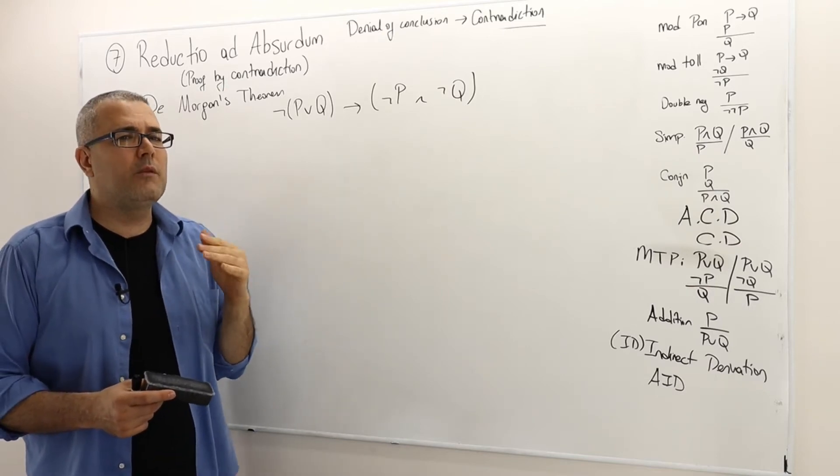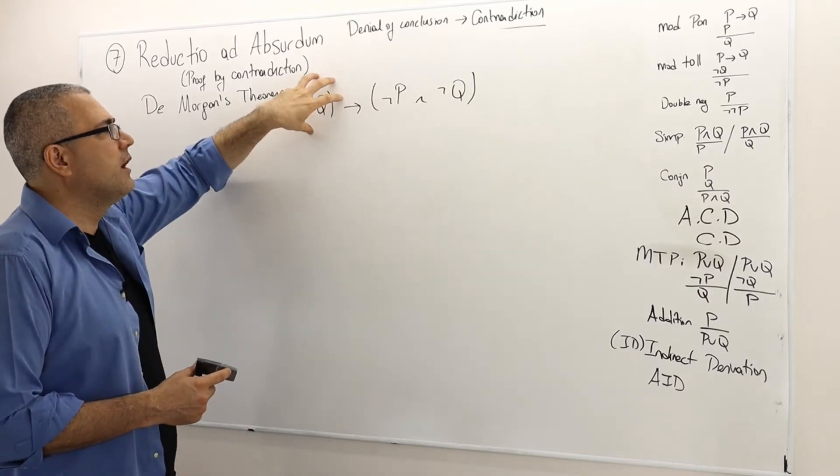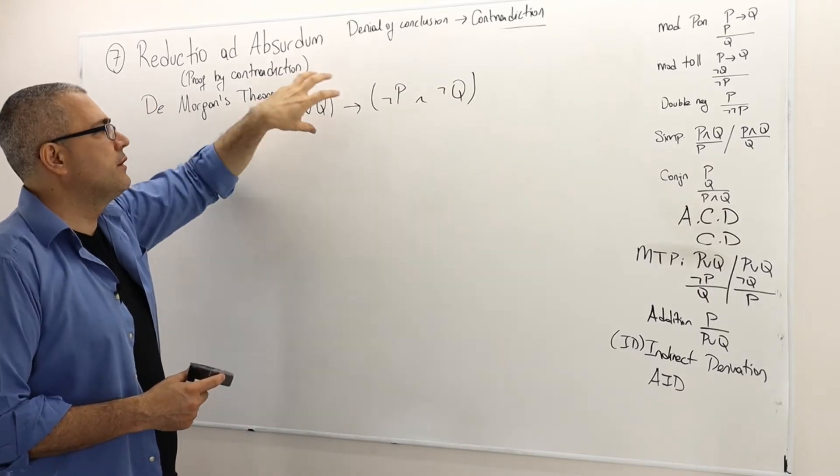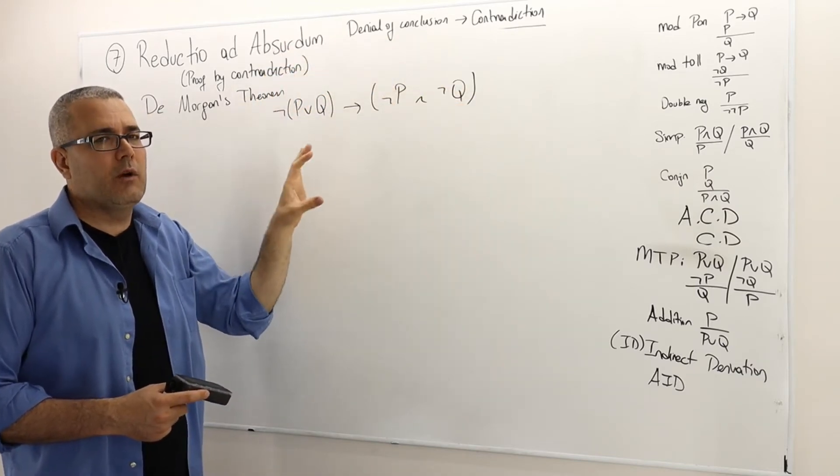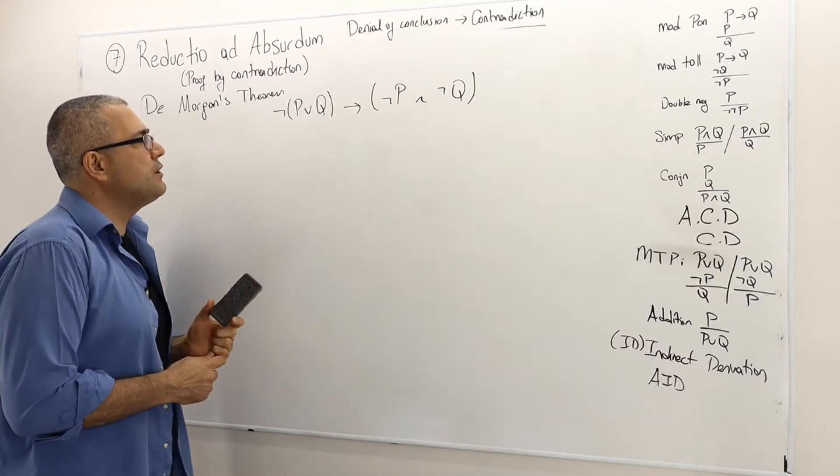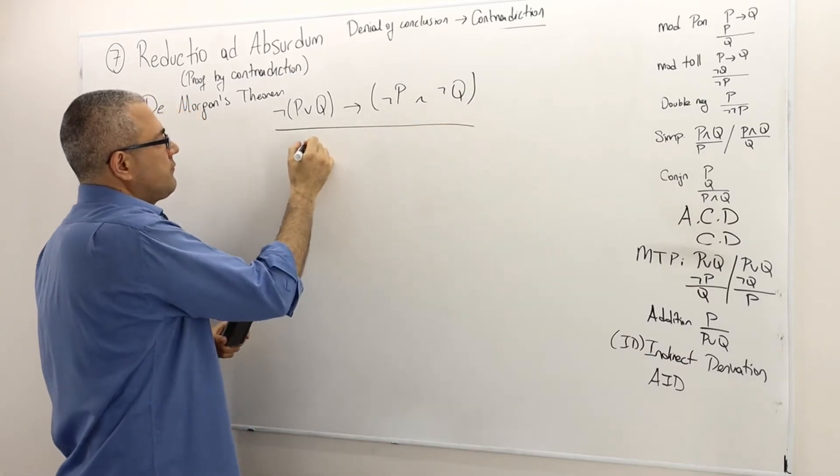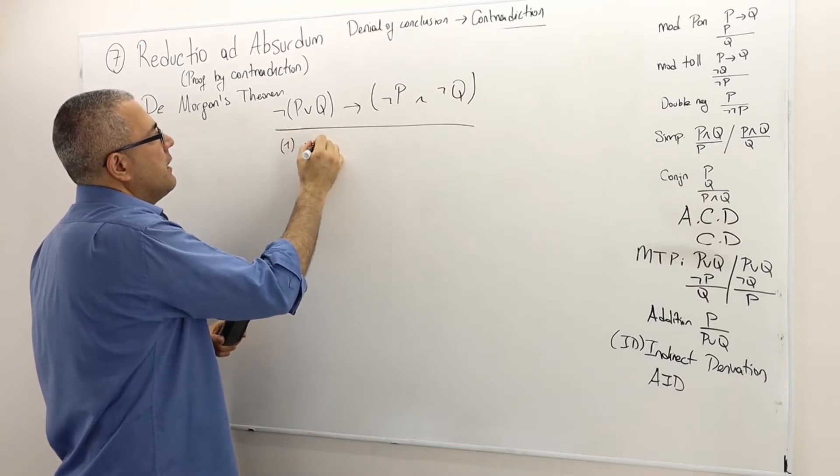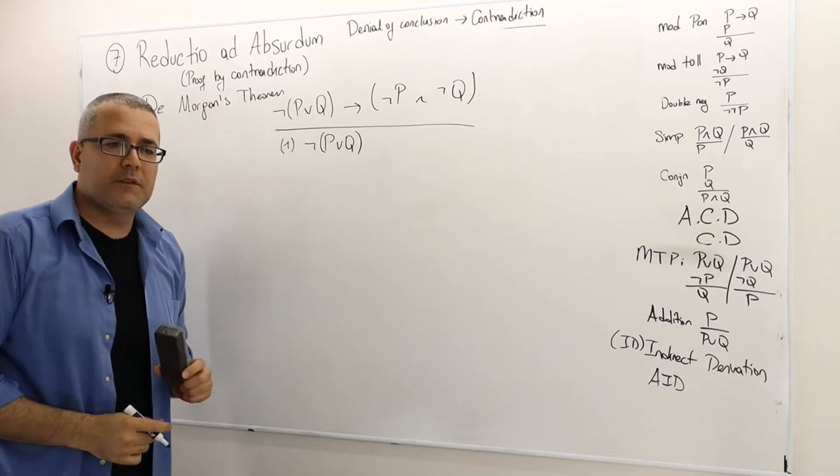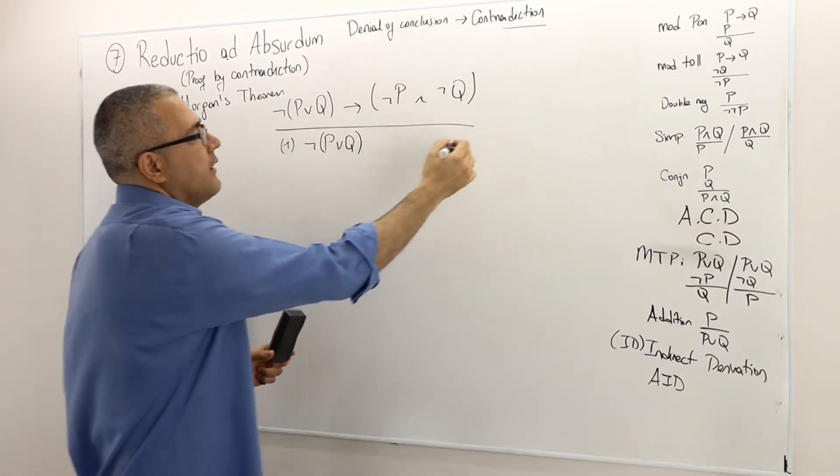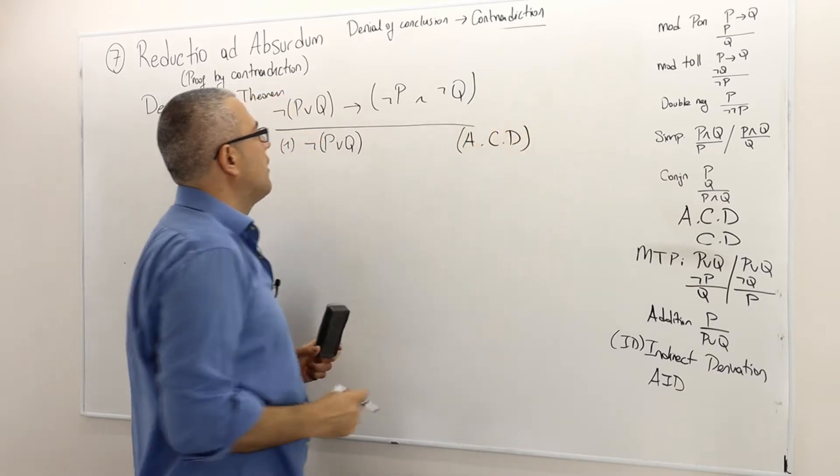So remember how we proved conditional sentences. We start assuming the first part because if the first part is false, this whole statement is true anyway. So therefore, let's assume that not P or Q is a true statement. Assumption for conditional derivation.